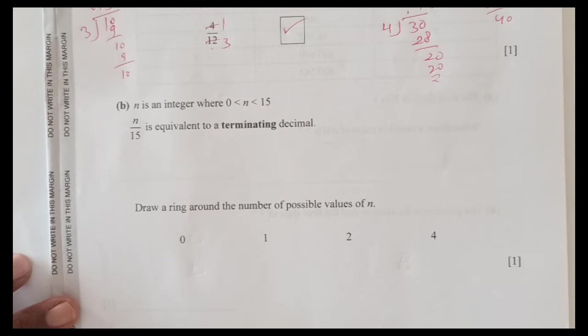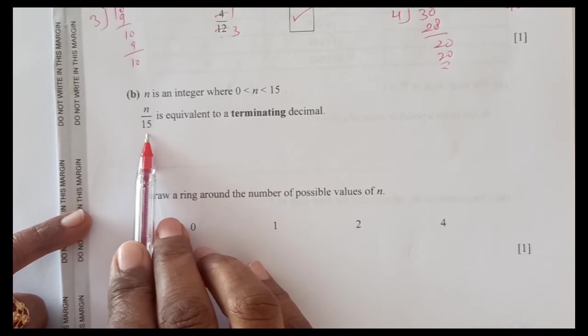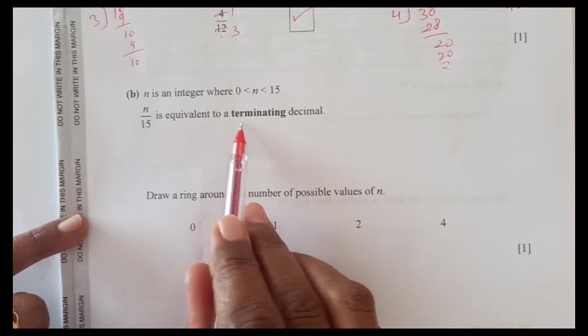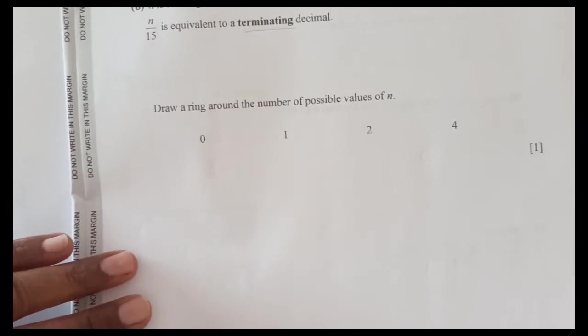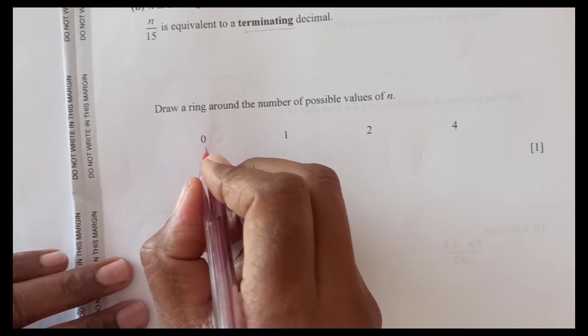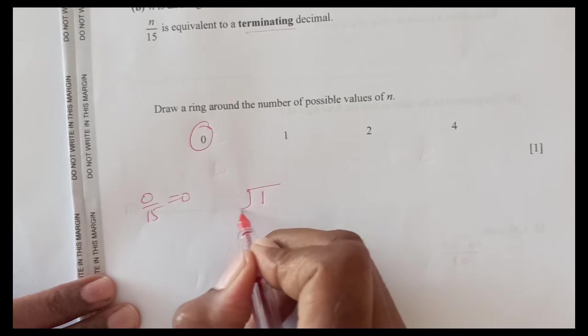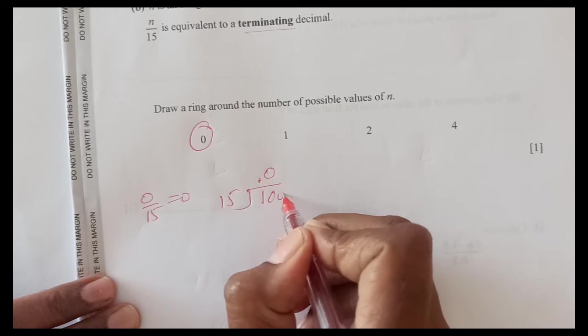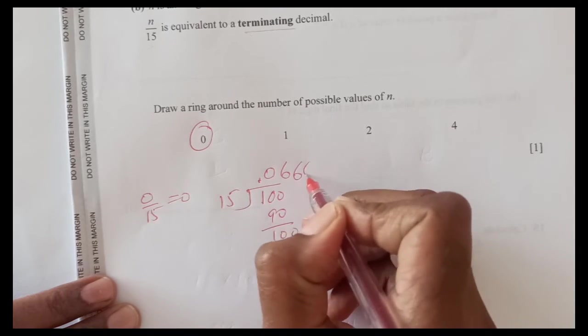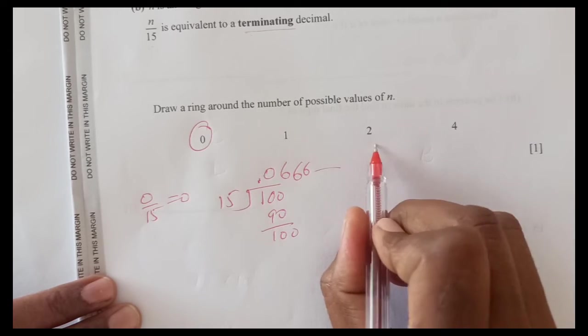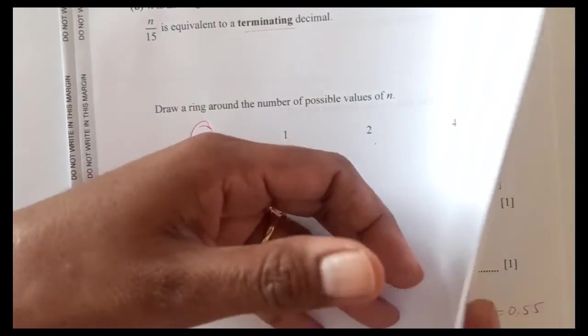This is 1 over 3, again 1 divided by 3 is going to give you 0.33 recurring, we are going to get the same thing again and again, so this is recurring decimal. Now n is an integer where 0 less than n less than 15, n over 15 is equivalent to a terminating decimal. Draw a ring around the number of all possible values of n. First one is 0, 0 over 15 is 0, so this is terminating. 1 over 15, 15 times 6 is 90, 106, it will continue, so this is not the case. Again you can check these are also not terminating decimals. So the only answer is going to be here 0.